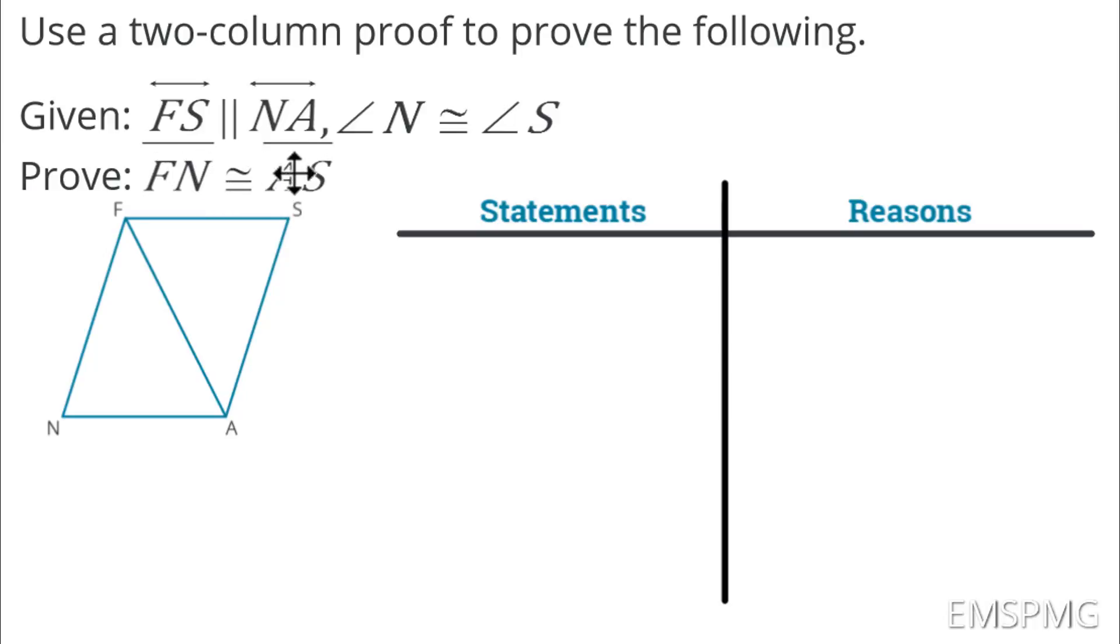Now, things to remember. This is the first time, the first proof that we are looking at, in which we're not being asked to prove two triangles congruent. What's nice about this is the fact that nothing that we have done is going to change. You're still going to have to prove that one triangle is congruent to the other, because once the two triangles are congruent to each other, then the parts are also congruent.